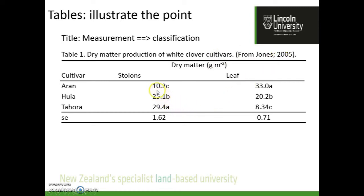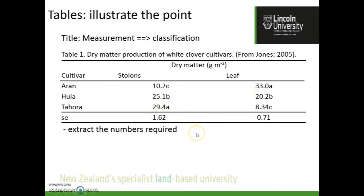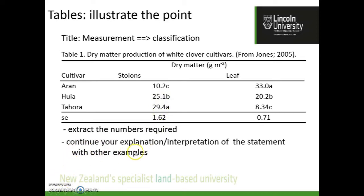A quick point on the data: use three significant figures — that's three non-zero figures, for example 10.2, 25.1, 29.4. The standard error should have one more decimal place than the main measurement. So for 29.4, the standard error would be 1.62 — two decimal places versus one. In the text, extract the specific numbers you need; for example, pull out 25.1 and use it in the text, then continue to explain or interpret the statement you've made.